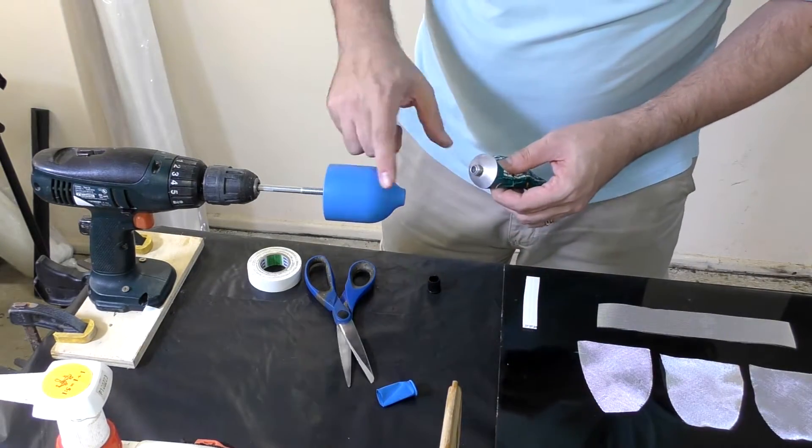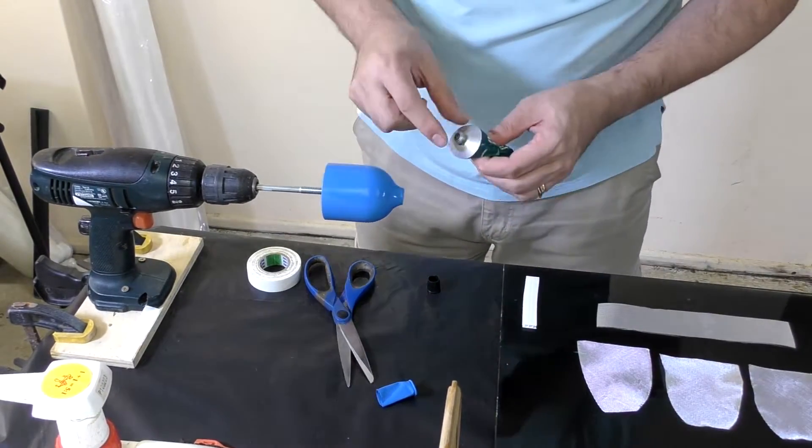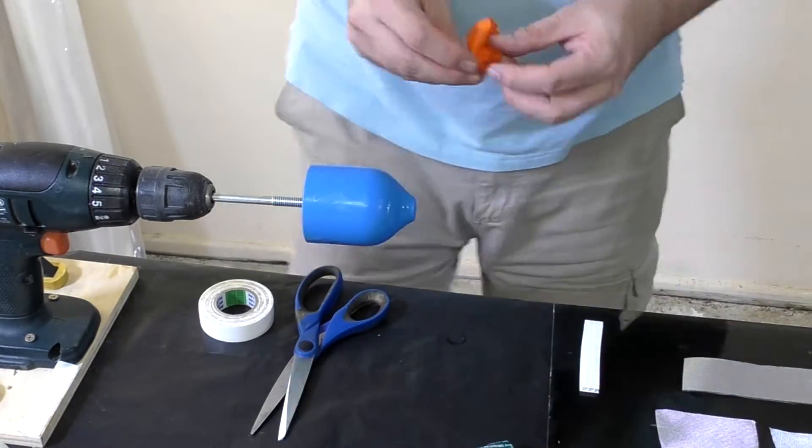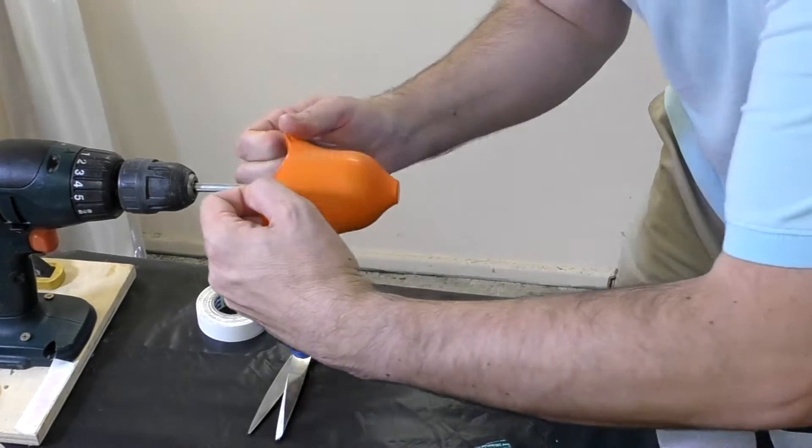Then we add some silicone grease, and then we add a second balloon over the top of that. The grease between the balloons lets us slide the end caps off easily.